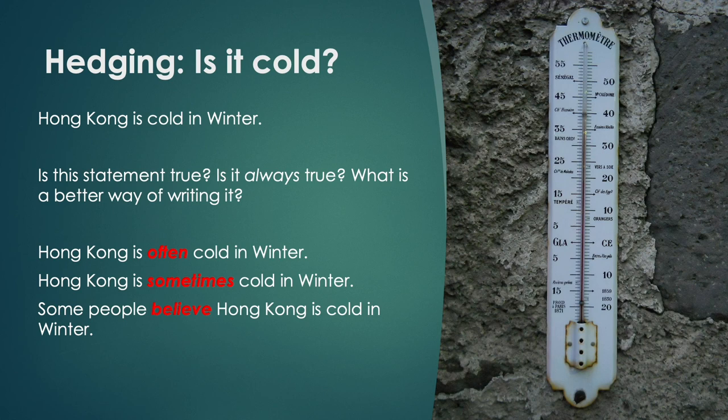The first two — often and sometimes — are adverbs. They help us modify our writing. When something is not 100% true, we can use these words so that someone cannot say your statement is wrong.